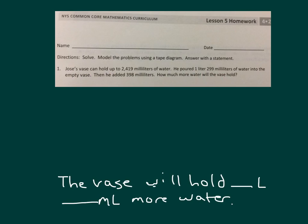I'll help you draw a tape diagram, and remember it also does say to solve. So it says the vase can hold up to 2,419 milliliters of water. So that is a known. So when he starts, he starts by pouring 1 liter, 299 milliliters of water. So this is the first pour.